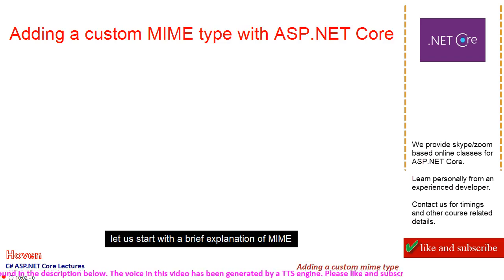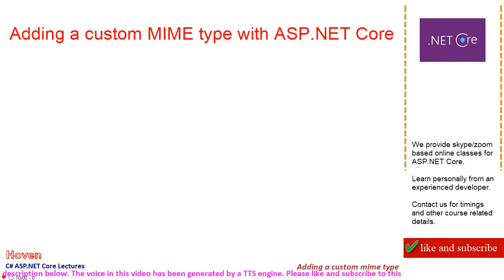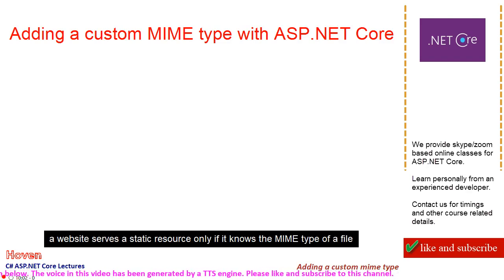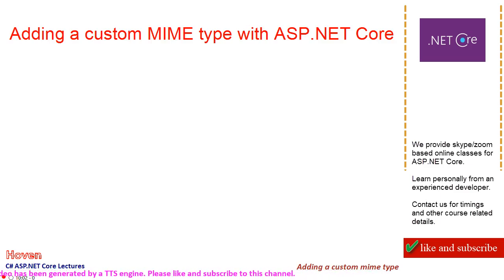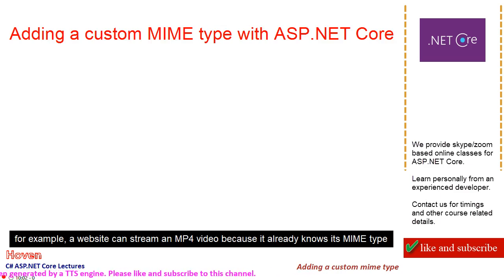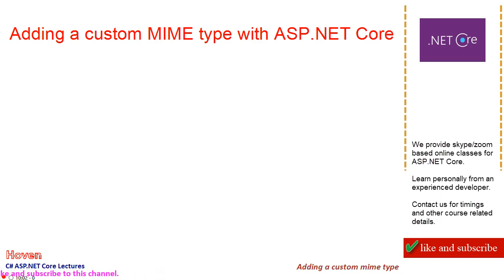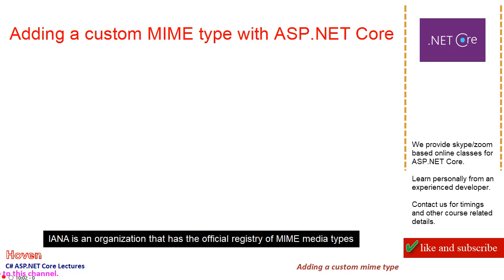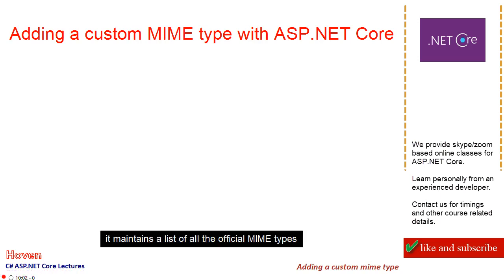Let us start with a brief explanation of MIME. A website serves a static resource only if it knows the MIME type of a file. For example, a website can stream an MP4 video because it already knows its MIME type. IANA is an organization that has the official registry of MIME media types — it maintains a list of all the official MIME types. You can visit their website to know more about it.